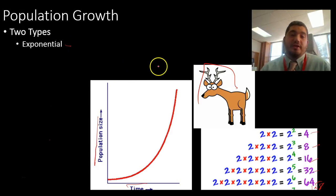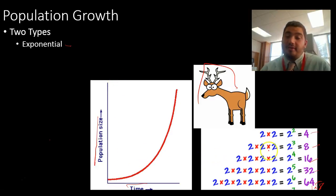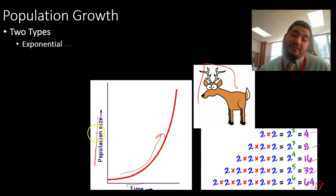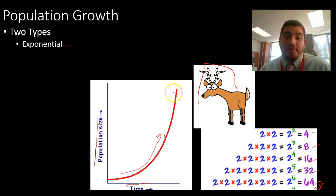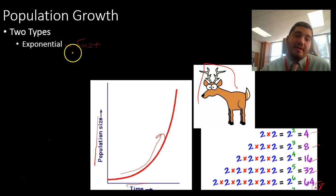Let's think about it — if we introduce two deer, a male and a female, into a giant cornfield, they're going to have no predators, plenty of food, and they're going to start growing. Two deer turns into four, four into eight, eight into 16. But we don't have an Earth that's completely populated by deer — just billions of deer running around — because at some point our ecosystem can only hold so many organisms. Exponential growth is very fast, but it cannot be sustained forever.